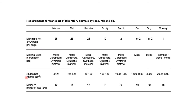The space per animal and maximum height of the box also differs with the animal species. The material used for preparing the transport cage or box should be metal, cardboard or synthetic material for mouse, rat, hamster, guinea pig or rabbit. For cat and dog, metal must essentially be used for the transport box. In the case of monkeys, bamboo, wood or metal can be used.